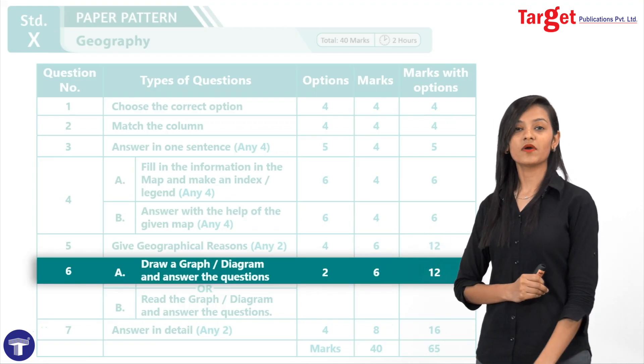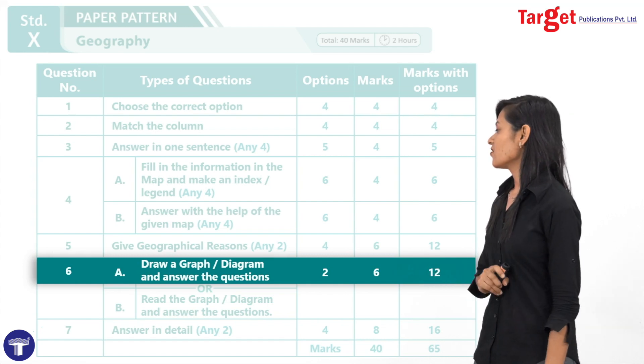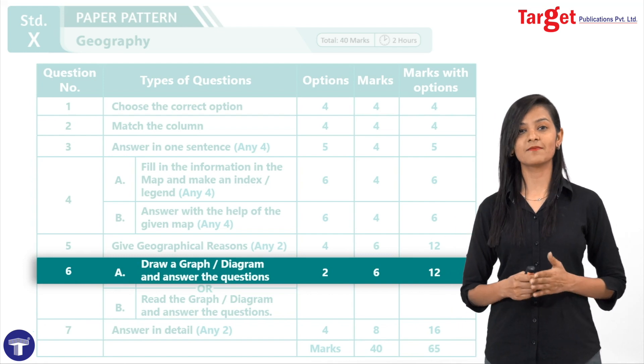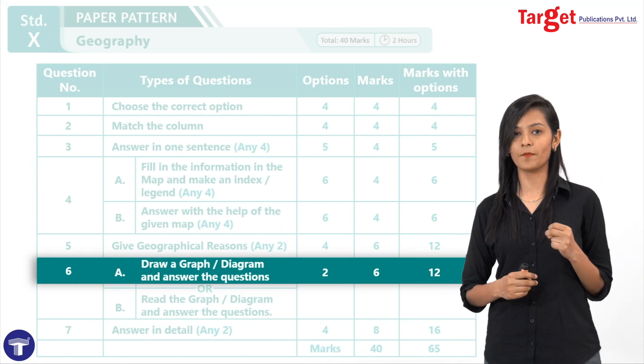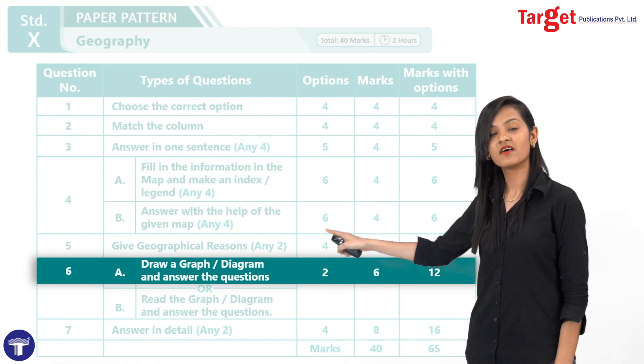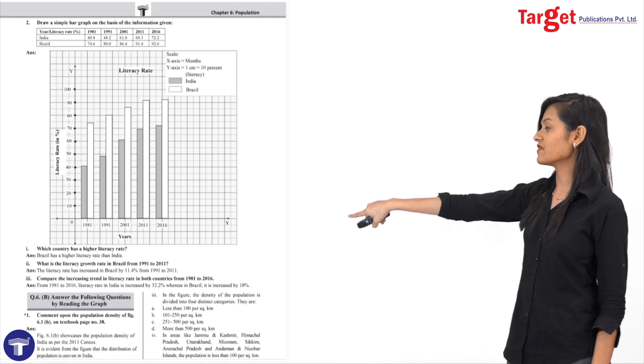Now, next is, question number 6A, which is, draw a graph or diagram and answer the questions. Here students, question number 6A is split into 2 parts. Basically, it is, 3 marks is for drawing the graph or the diagram, and next 3 are for 3 questions given below the graph.